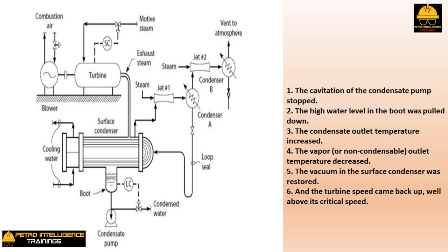After 15 minutes of operation the turbine speed slipped back down — vacuum in the surface condenser was lost again, and the vapor outlet temperature had dramatically increased. But this time the condensate outlet temperature had also increased. The surface condenser cooling water outlet temperature had increased from 100°F to 135°F — a sign of loss of cooling water flow. As none of the other water coolers in the plant had been affected, the conclusion was that the cooling water inlet to the surface condenser was partly plugged.